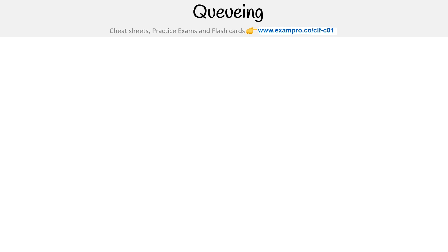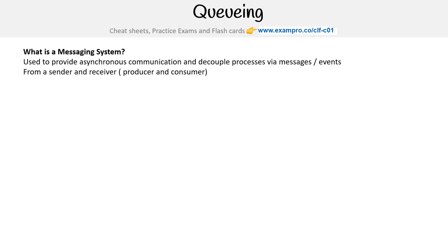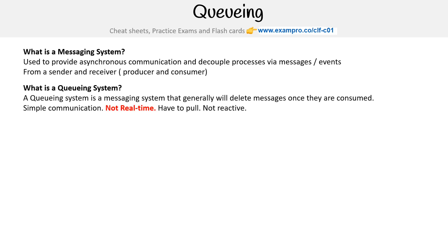To understand queuing, we need to know what a messaging system is. It's used to provide asynchronous communication and decouple processes via messages and events from a sender/receiver or a producer and consumer. A queuing system is a messaging system that generally deletes messages once they are consumed. It's for simple communication — it's not real time, you have to pull the data, it's not reactive. A good analogy would be imagining people queuing in a line to go do something.